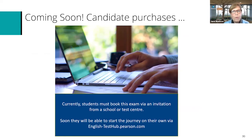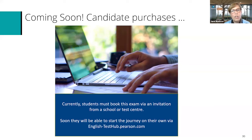Right now, the way this works is an institution, school, or organization will be purchasing on behalf of the candidate, and the candidate will then go in and pick their date and time. But in the very near future, candidates will be able to make the purchase themselves and start their journey via english-testhub.pearson.com. For now, we will be selling primarily to institutions, teachers, schools, and employers who want their candidates to take this test.